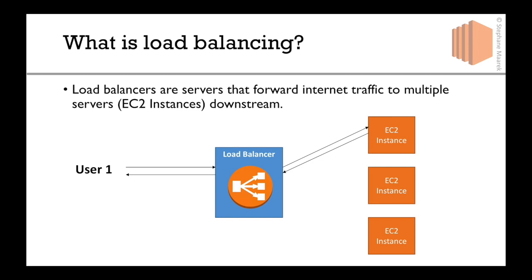As you can see, user one does not directly connect to your EC2 instance — the load balancer does. User two will connect to the load balancer and the load balancer, instead of using EC2 instance one, will use EC2 instance number two. For user three, you'll get EC2 instance number three. You can have a thousand users and say five EC2 instances, and the whole purpose of the load balancer is really to balance the load across many EC2 instances.